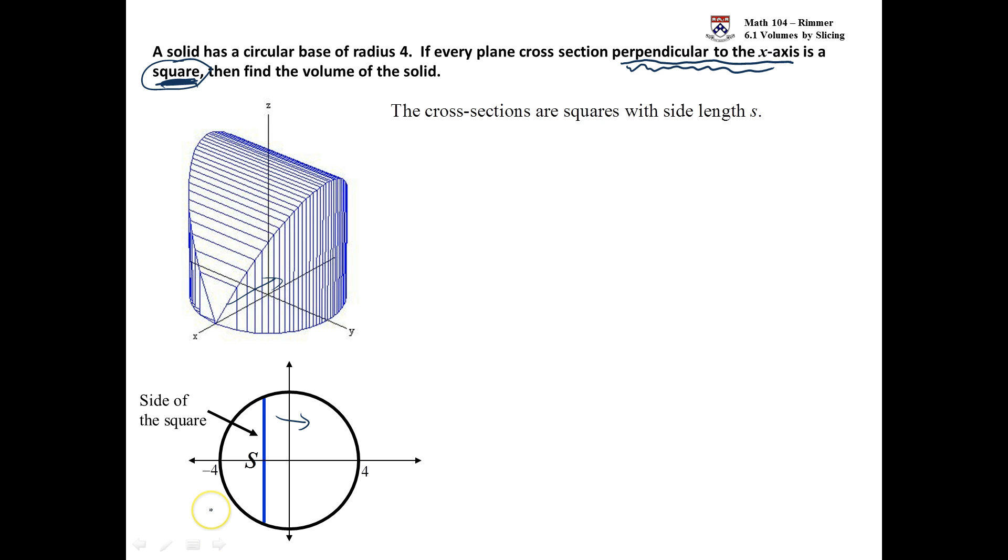Our cross-sections are squares with side length s. Coming out of the screen is a square, and the side length is this blue distance here. We know that the area of a square is s squared. So if we can get s in terms of x, we'll be in good shape.